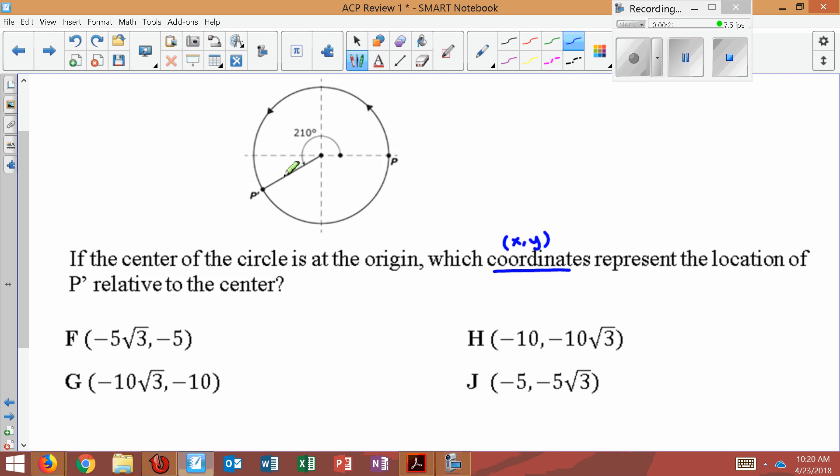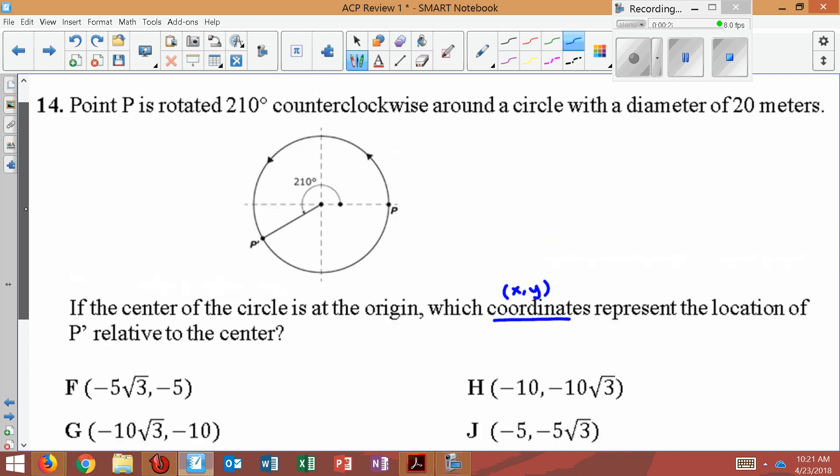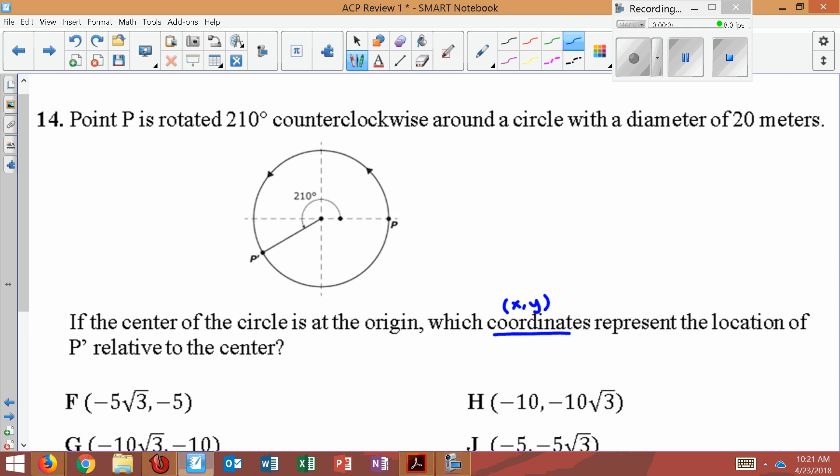This point here is basically kind of looking like a slant. It's like a hypotenuse. Now what we've been told here is a circle with a diameter of 20 meters. That means all the way across is 20. If that's the case, then the radius, if the diameter is 20, and I'll put up here, diameter equals 20, then the radius equals 10.